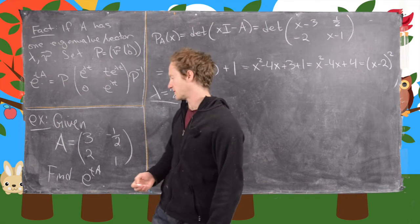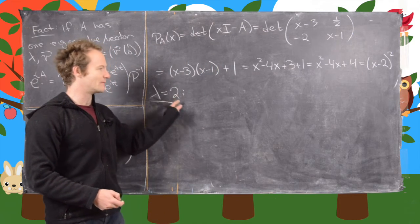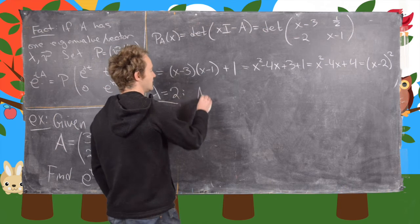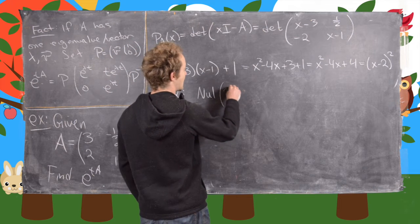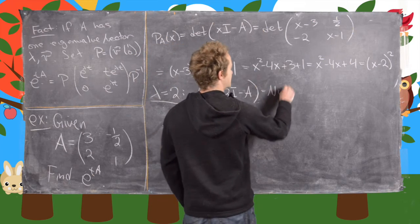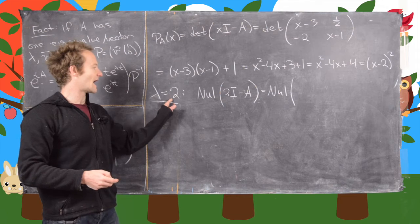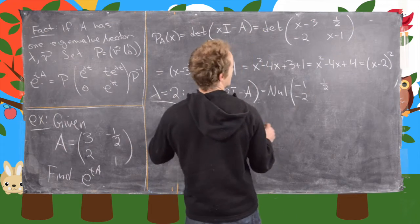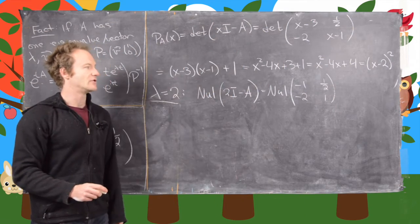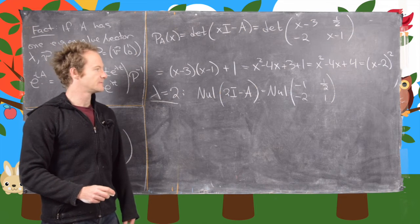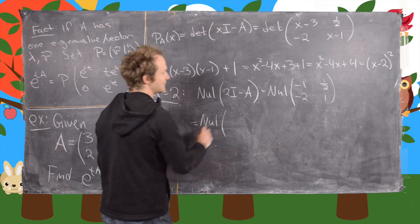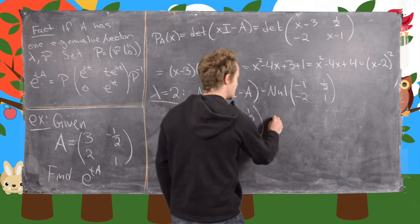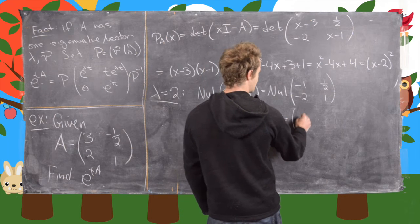To find the eigenvector, we look at the null space of 2 times the identity minus A. Plugging in the eigenvalue X equals 2, we get the matrix (negative 1, 1/2, negative 2, 1). Those rows are multiples of each other, so after row operations this is the same as the null space of (1, negative 1/2, 0, 0).